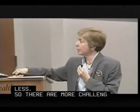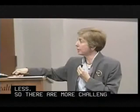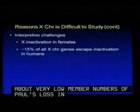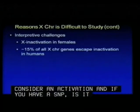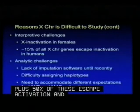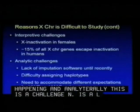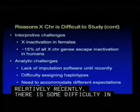Still, we're talking about very low percentages of SNP calls lost. Other reasons this is challenging: one does have to consider X inactivation — if you have a SNP that you've picked up, is it on the active chromosome or not? About 15% of all X chromosome genes escape inactivation, and that's not random. Analytically, there was a lack of imputation software until relatively recently, some difficulty in assigning haplotypes, and a need to accommodate different expectations for Hardy-Weinberg equilibrium and minor allele frequency estimation.